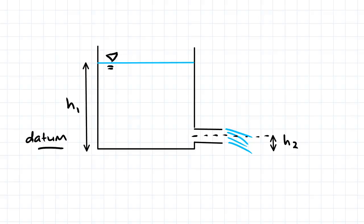Every time we consider the datum, it is always in the same place — we can't change where it is, otherwise that would render our work pointless. It must be consistent; I've established it at the bottom of the tank. It's also pretty much essential to always write in your datum, so you know what you're referring to in terms of z1 and z2. Next, we choose a streamline for which we know the most about the two endpoints, so that enables us to solve the equation for hopefully only one unknown.